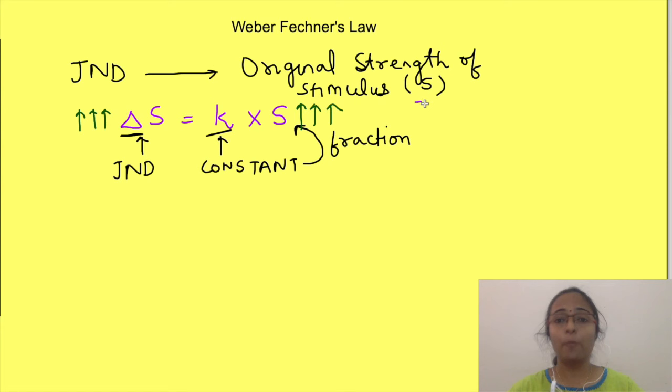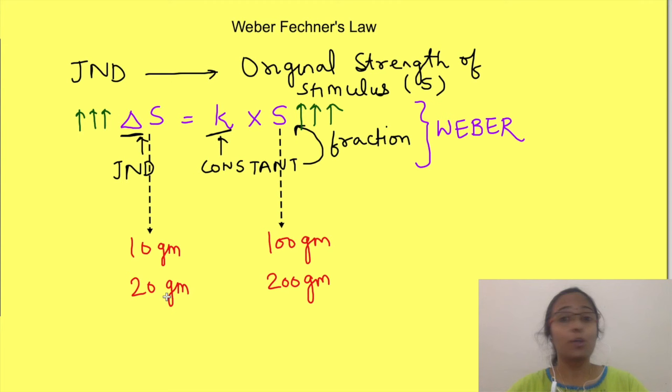This concept was given by Weber. This equation also means that if initial weight was 100 grams and just noticeable difference was 10 grams, then if we have 200 grams, the just noticeable difference will be 20 grams. So the brain is perceiving 10 gram change and 20 gram change in a similar manner depending on the original strength of the stimulus.